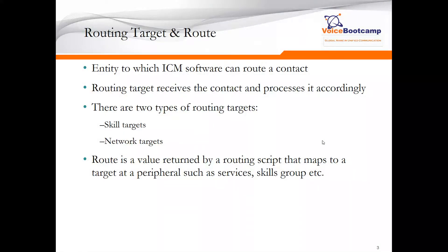A routing target is an entity to which ICM software can route a contact. A routing target could be, for example, a skills group or a network device. A routing target receives a contact and processes it accordingly. For example, if you're sending a call to a sales group, the idea is to select an agent from that particular group.